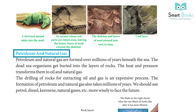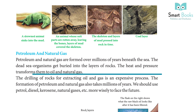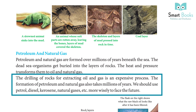Petroleum and natural gas are formed over millions of years beneath the sea. Dead sea organisms get buried into layers of rocks, and heat and pressure transform them into oil and natural gas. The drilling of rocks for extracting oil and gas is an expensive process. The formation of petroleum and natural gas also takes millions of years. We should use petrol, diesel, kerosene, and natural gases more wisely to face the future.